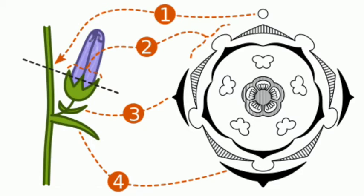The fourth one indicates the bract, which will be shown on the lower side of the floral diagram. Bract is the leaf-like structure present below the flower. Bractiola is the leaf-like structure present on the flower itself. Below the flower it is bract; on the flower it is bractiola.